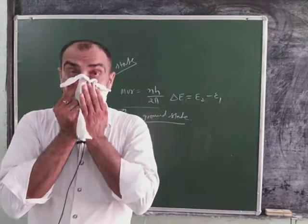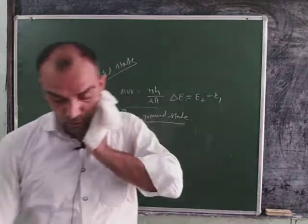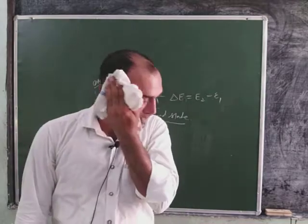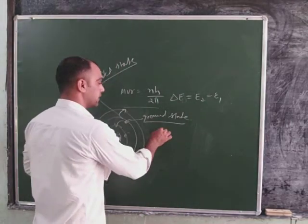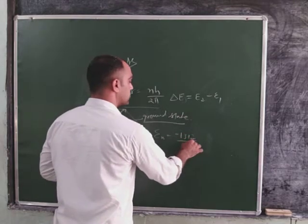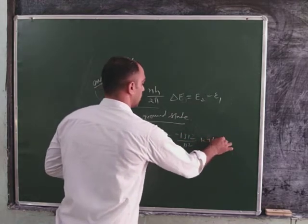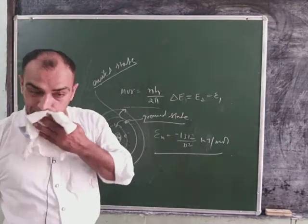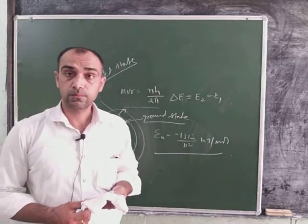You have seen that when we were discussing, the energy that was given as En is equal to minus 1312 divided by n square kilojoule per mole. You will remember, in the last section, we have talked about this.